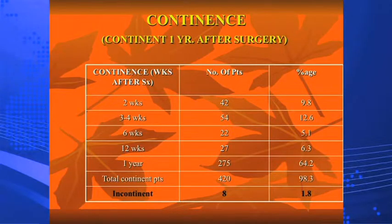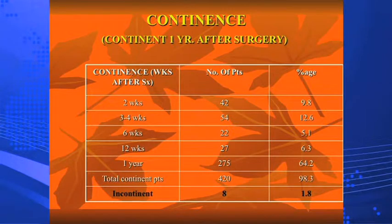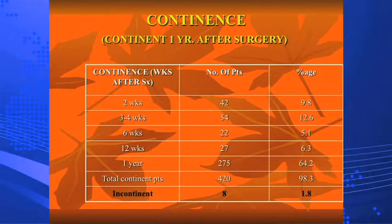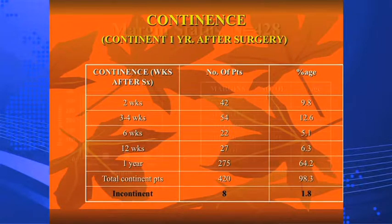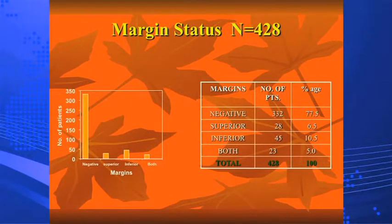Continence was also a problem: 1.8% of patients remained completely incontinent. At the end, we had only 64% continence, meaning patients needed some form of pad. Essentially about 60–75% of patients would not require any pad at all. Regarding margin status, superior and inferior positive margins were more common, with both margins positive in 23 patients at 23%.